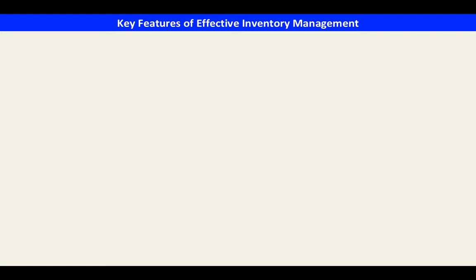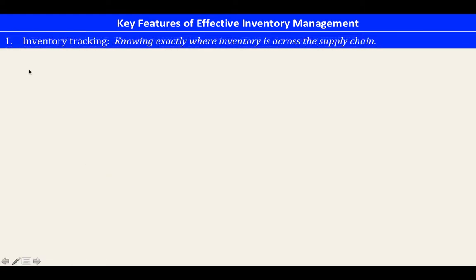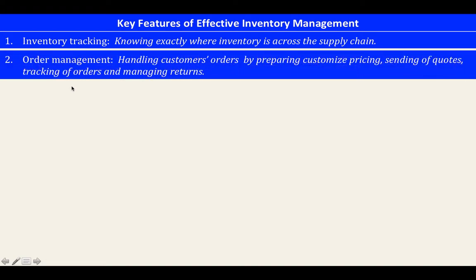Now, the key features of effective inventory management. First is inventory tracking — knowing exactly where inventory is across the supply chain. The next feature is order management: handling customers' orders by preparing customized pricing, sending codes, tracking of orders, and managing returns.